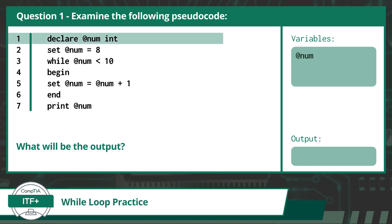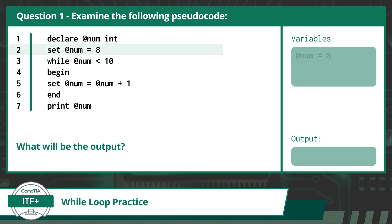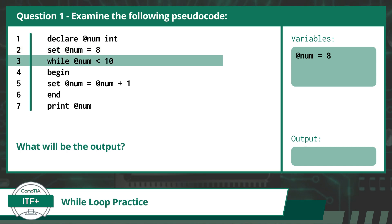In line 1, we declare a variable @num. In line 2, we set the variable @num to the value of 8. On line 3, we see a condition statement for a while loop. Our condition statement calls for our program to check if @num is less than 10. Since the value of @num, which is currently 8, is less than 10, we will execute the code statements within the loop.